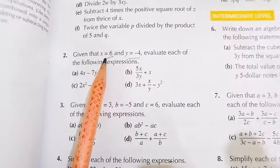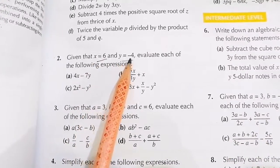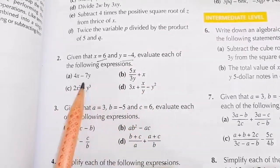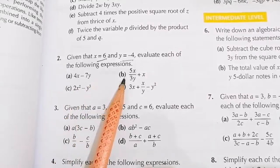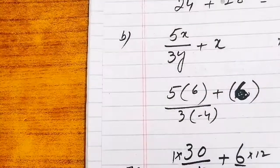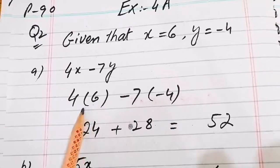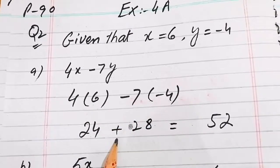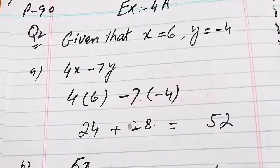Question number 2: some values are given — x equals 6, y equals minus 4. We have to evaluate the given expressions. For part (a), 4x minus 7y: substituting x equals 6 and y equals minus 4, we get 4 times 6 which is 24, and minus times minus gives plus 7 times 4 which is 28, so 24 plus 28 equals 52.